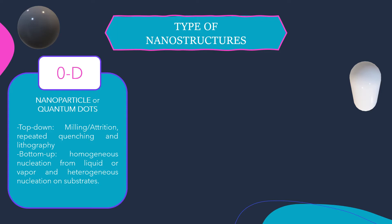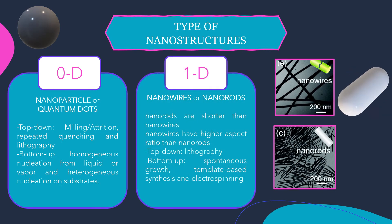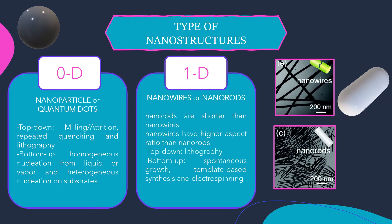Examples of top-down and bottom-up approaches are as mentioned in the slide. Bottom-up approaches are far more popular compared to top-down approaches because many bottom-up methods have been developed. The second type is 1D — one-dimensional nanostructures.